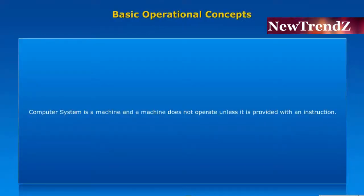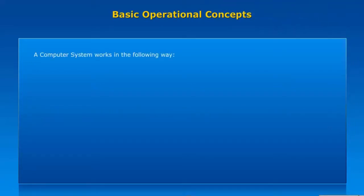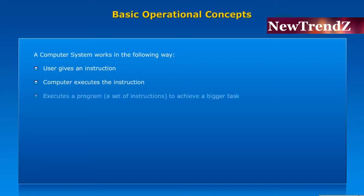A computer system is a machine, and a machine does not operate unless it is provided with an instruction. A computer system works in the following way: the user gives an instruction, the computer executes the instruction, and it executes a program — a set of instructions to achieve a bigger task.